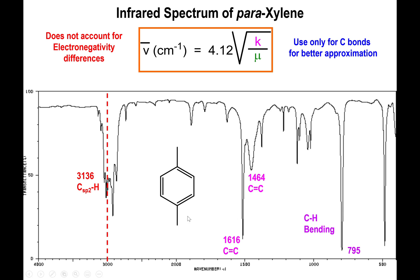Para-xylene or 1,4-dimethyl benzene. You have peaks above 3000 and you have peaks between 1600 and 1400 which are characteristics of the carbon-carbon double bonds.